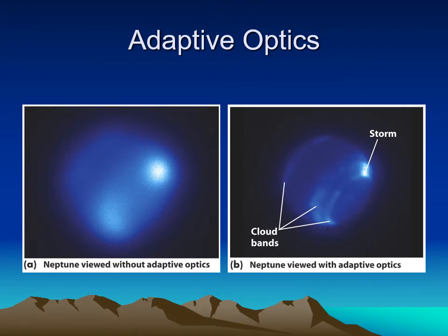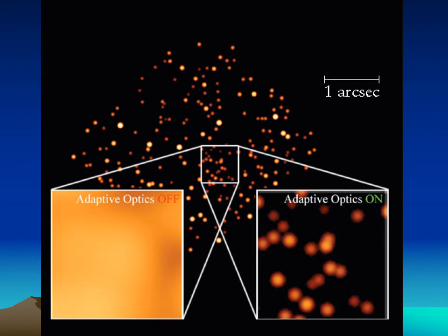An example of adaptive optics is an image of the planet Neptune: on the left is one of the best views from Earth with a regular telescope, with atmospheric distortion. On the right, adaptive optics removes much of that distortion and gives a view of Neptune almost as good as the Hubble Space Telescope. Similarly, looking toward the center of the galaxy with an infrared telescope, without adaptive optics all the star light blurs together, but with adaptive optics on you can see individual stars near the galactic center.